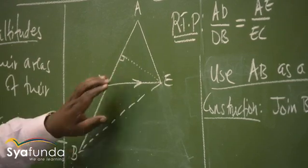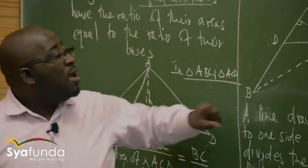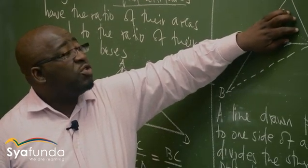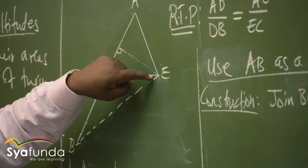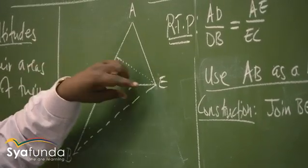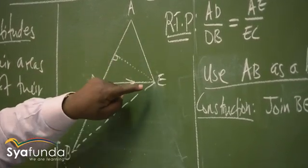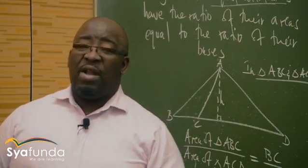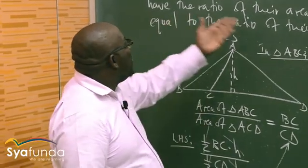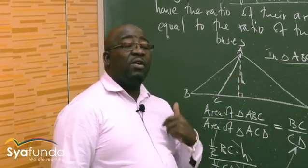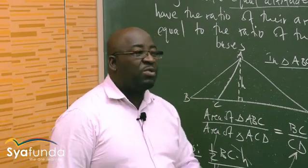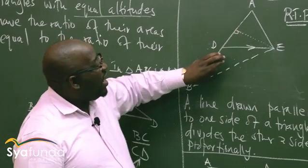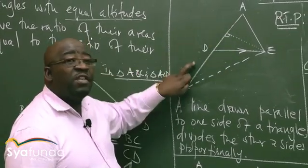We have the perpendicular height of the first triangle, which is H in this particular case. The altitude of the second triangle will be the same height. So both triangles now have equal altitudes. What do we know about triangles with equal altitudes? They have the ratio of their areas equal to the ratio of their bases. So we can say area over area equals this base over this base.